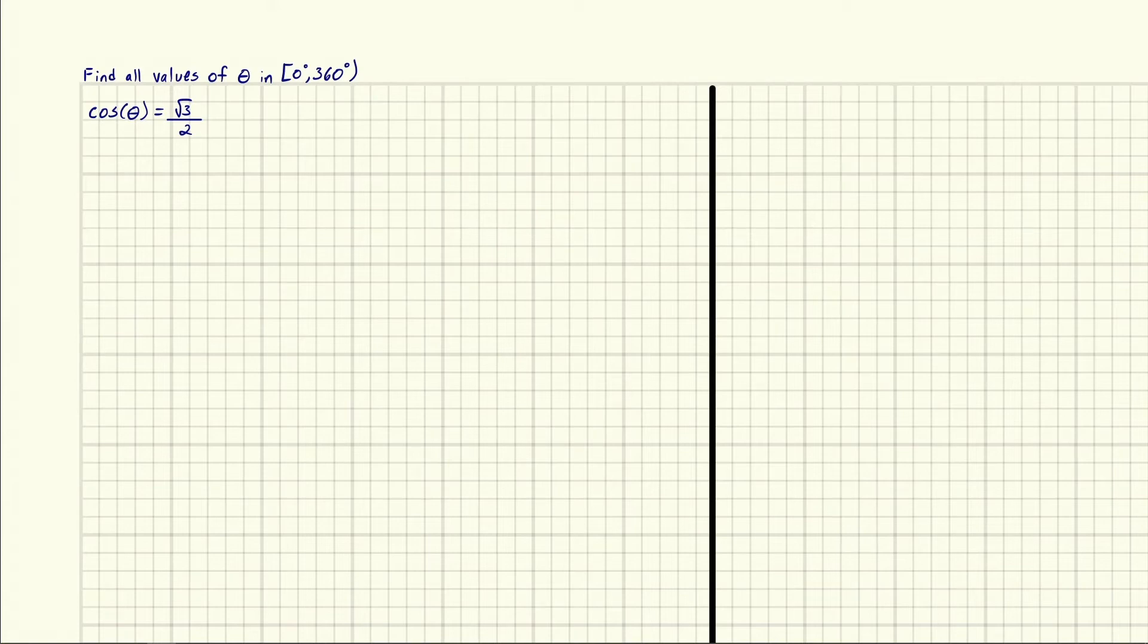Eric Burgess here and they've told us to find all the values of theta in 0 to 360 degrees where cosine theta is equal to √3 over 2.